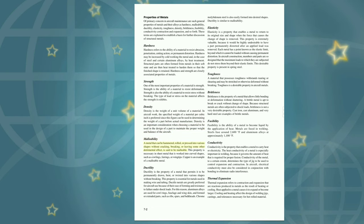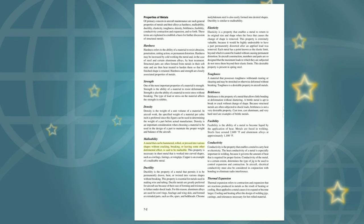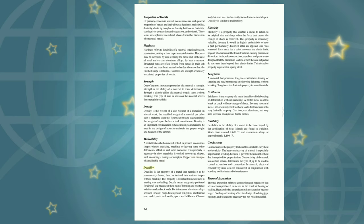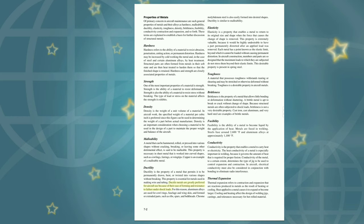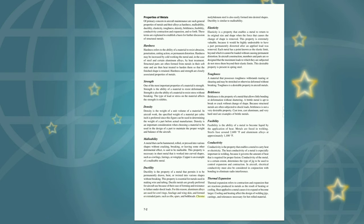Malleability: A metal that can be hammered, rolled, or pressed into various shapes without cracking, breaking, or leaving some other detrimental effect is said to be malleable. This property is necessary in sheet metal worked into curved shapes such as cowlings, fairings, or wingtips. Copper is an example of a malleable metal. Ductility is the property of a metal that permits it to be permanently drawn, bent, or twisted into various shapes without breaking. Ductile metals are greatly preferred for aircraft use because of their ease of forming and resistance to failure under shock loads. Aluminum alloys are used for cowlings, fuselage and wing skin, and formed or extruded parts such as ribs, spars, and bulkheads. Chrome-molybdenum steel is also easily formed into desired shapes. Ductility is similar to malleability.